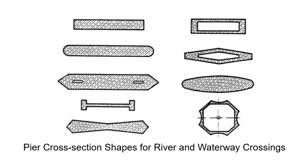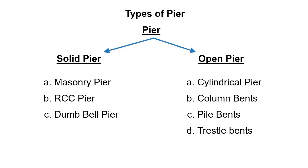Comparatively, length, width, and shape are considered. For waterways, we choose based on length and width equal to the flow. From an exam point of view, we have to choose the types of piers. Piers are classified into two main categories: solid piers and open piers.